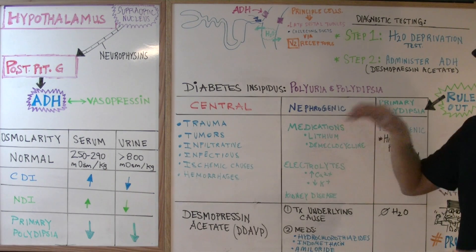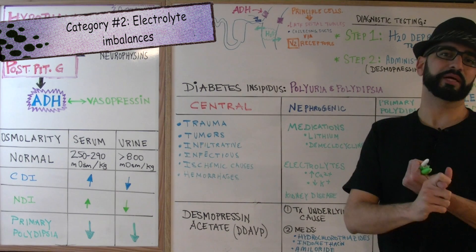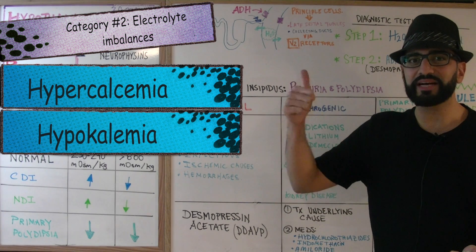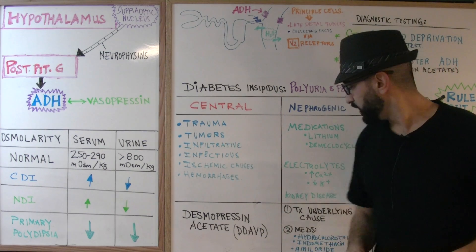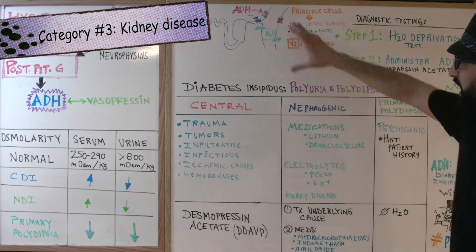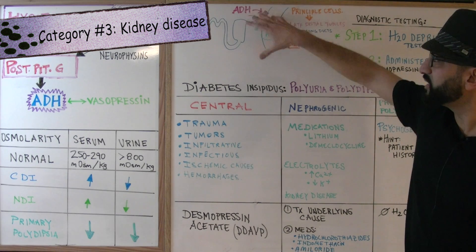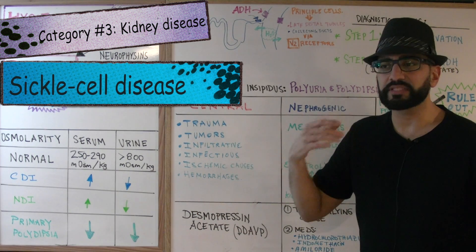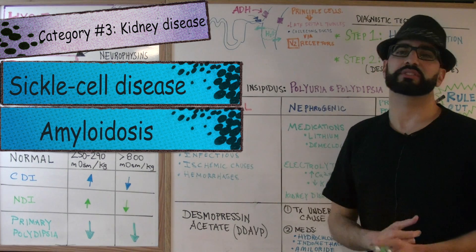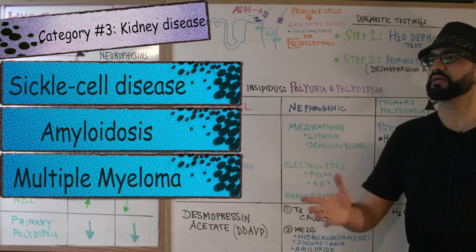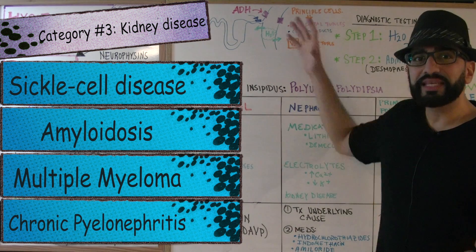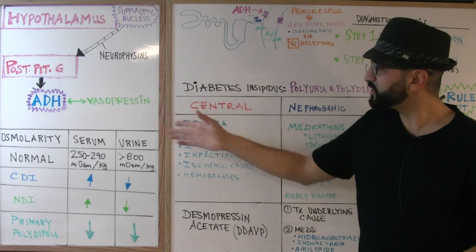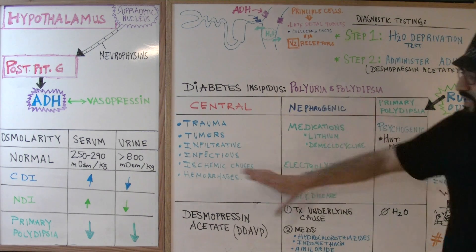The second category affecting the kidneys is electrolyte imbalances — hypercalcemia and hypokalemia, meaning increased calcium or very low potassium. The third category is kidney disease. Anything messing up the kidneys can cause ADH not to act on the receptors. Examples include sickle cell disease, amyloidosis, multiple myeloma, and chronic pyelonephritis. Any kidney disease affecting the nephrons is not going to allow it to respond to ADH. The patient will still present the same way — polyuria, polydipsia, and the same labs.